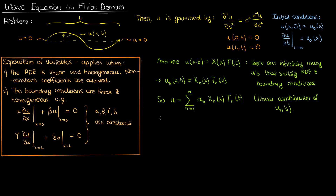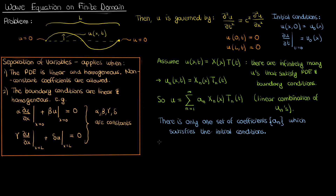Now you might wonder: if any linear combination of these solutions works in terms of satisfying the PDE and the boundary conditions, how is our solution even meaningful and unique? Well not quite, because there's only one linear combination with a particular set of coefficients that satisfies the initial conditions. So these initial conditions really ensure that we end up with a unique linear combination and thus a meaningful solution.